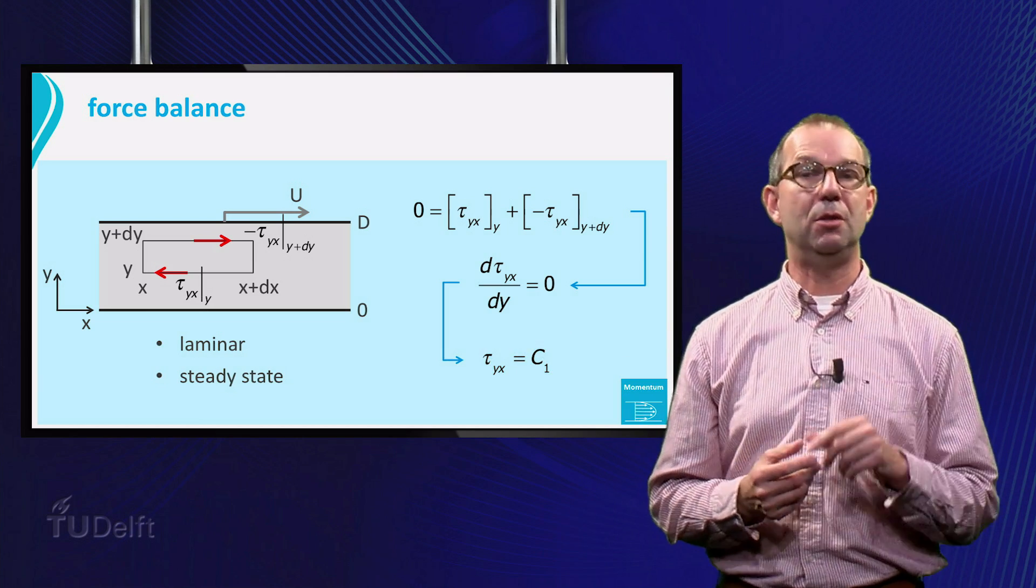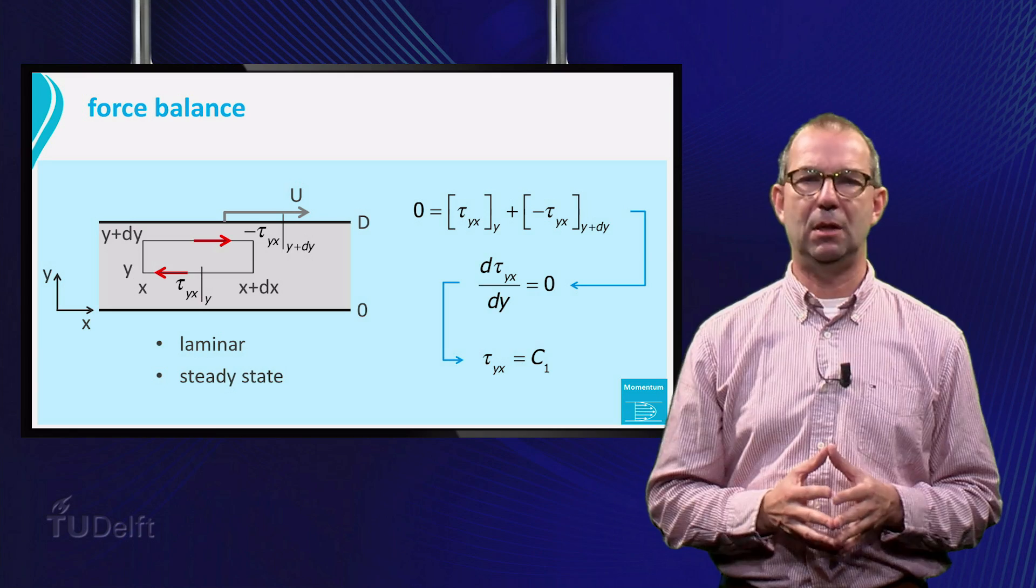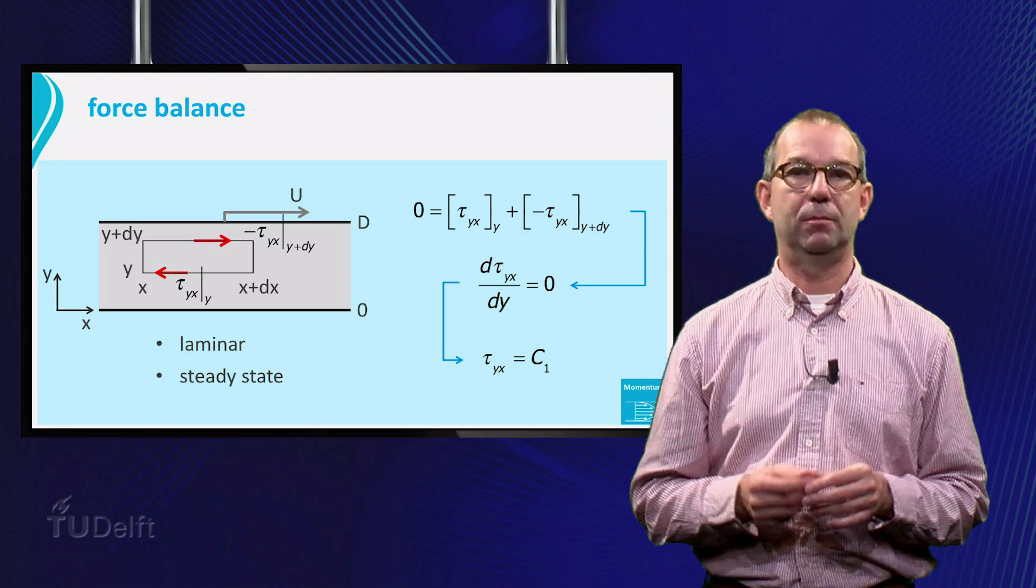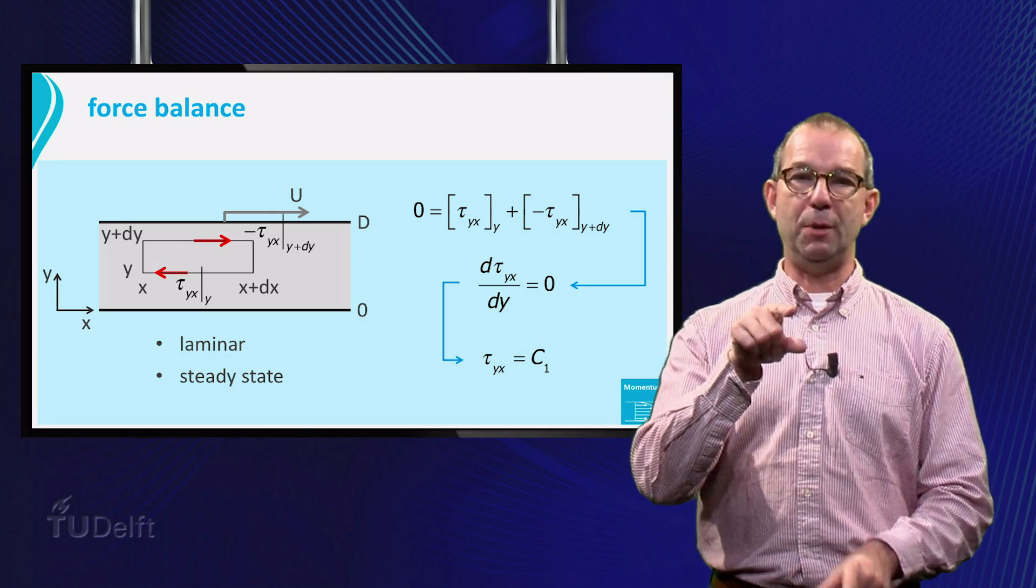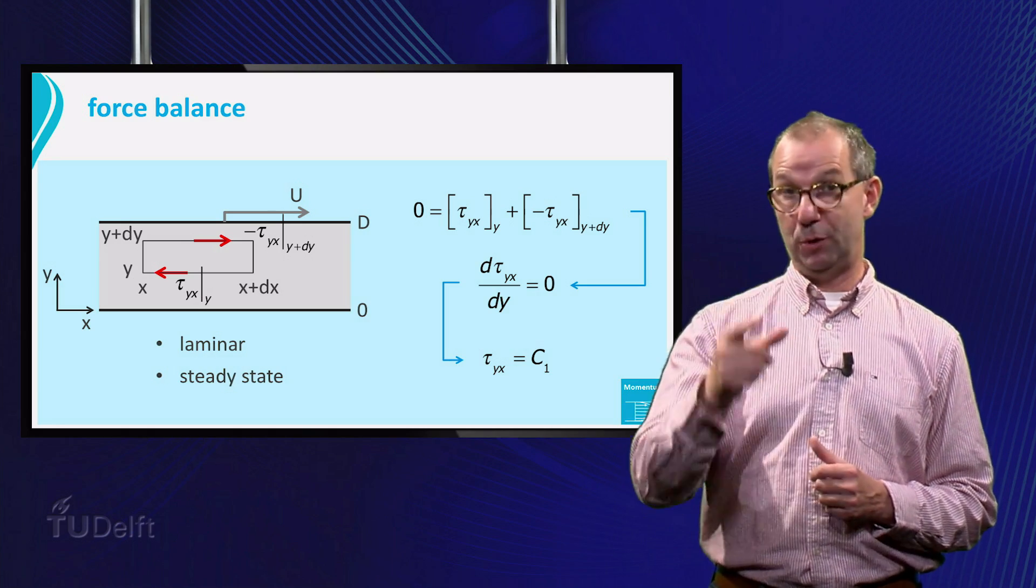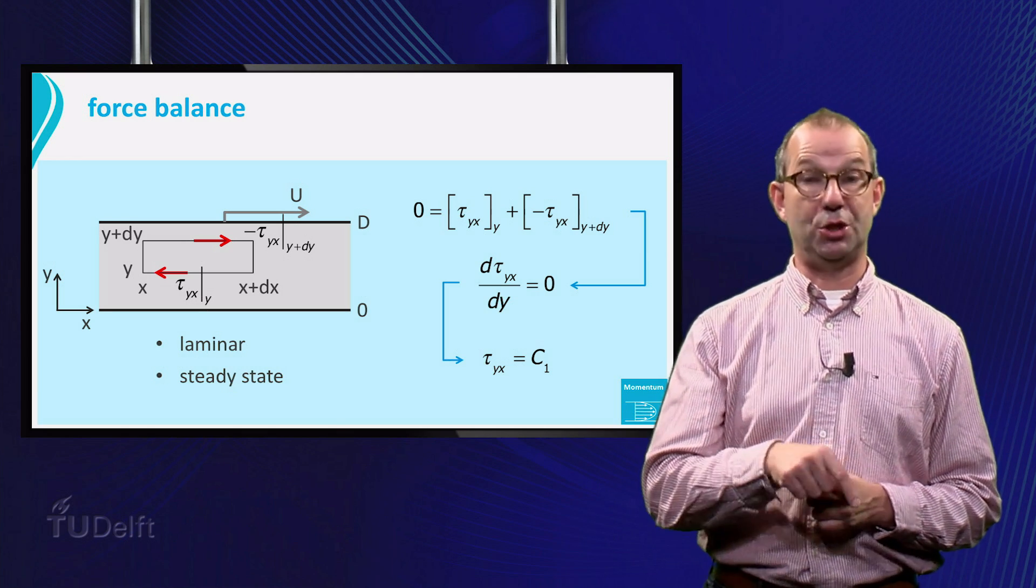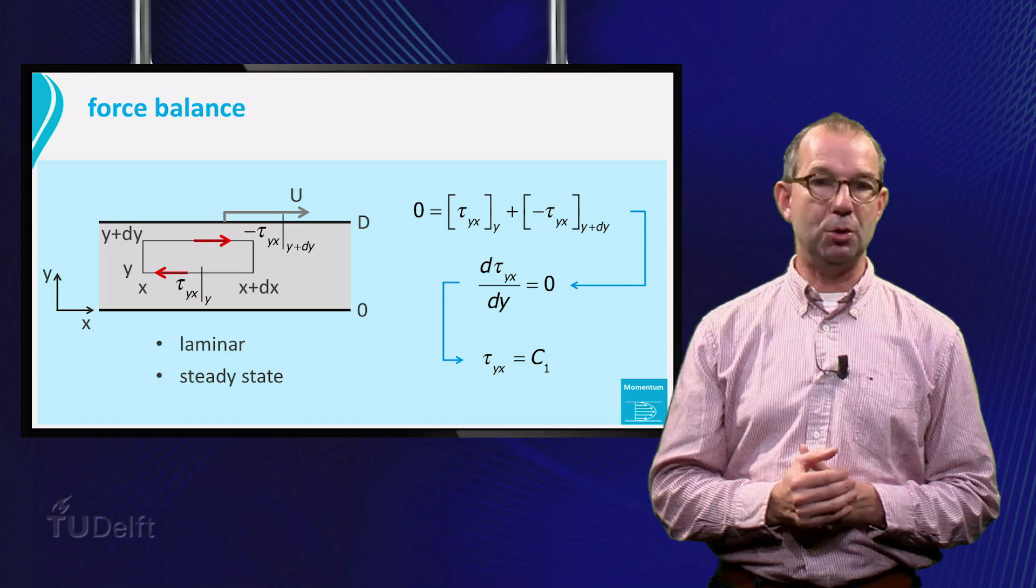To find the constant, we need a boundary condition, but we don't have that for tau. We only have boundary conditions for the velocity. The fluid at each of the plates moves with the velocity of the plate. This is called the no-slip or stick condition and we will use it a lot.